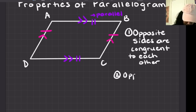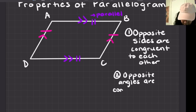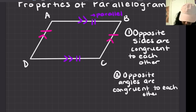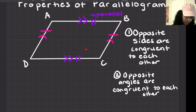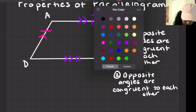The second property is that the opposite angles are also congruent to each other. The opposite angles are the ones directly across from each other. For example, A and C are opposite angles, and B and D are opposite angles.